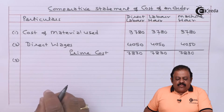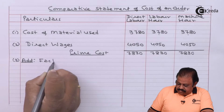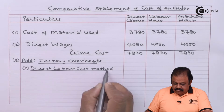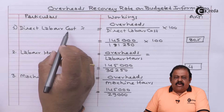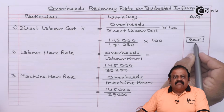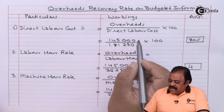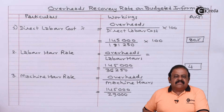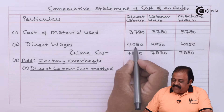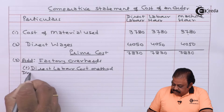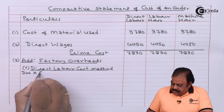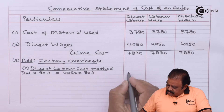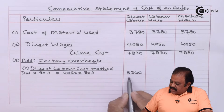To the prime cost of 7,830 we are required to add the amount of factory overheads. Under the direct labor cost method, we have a rate of 80%, meaning overheads are 80% of direct labor cost. So direct wages of 4,050 multiplied by 80% gives overheads.